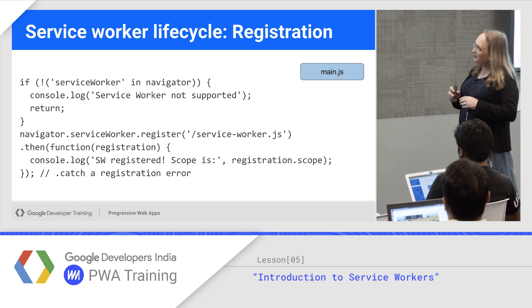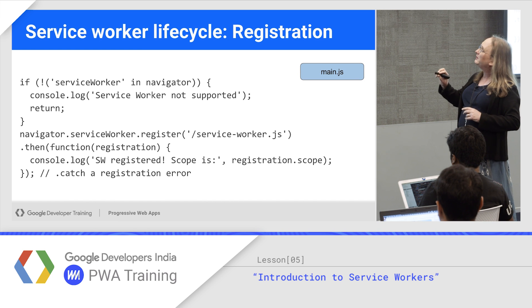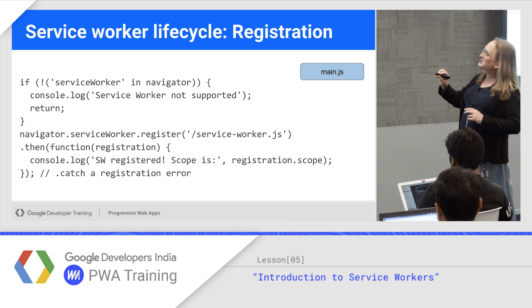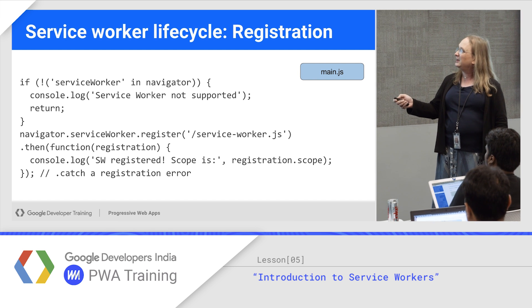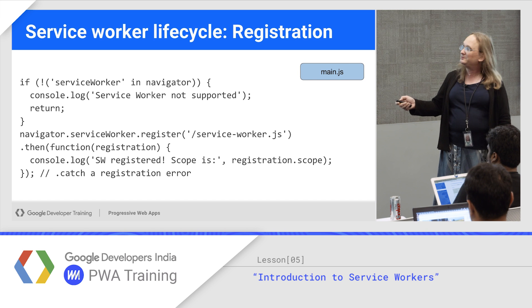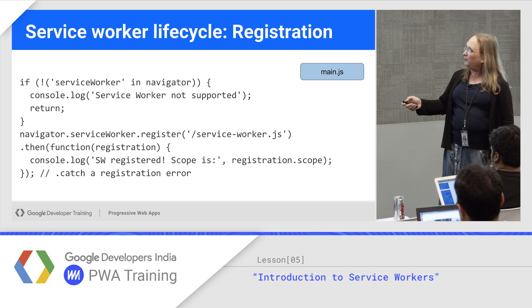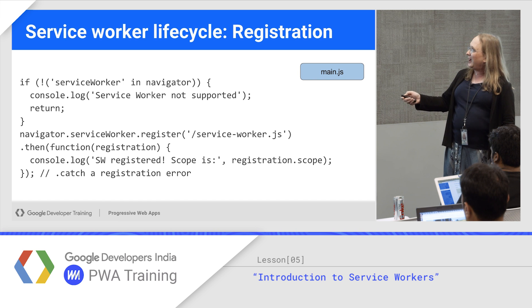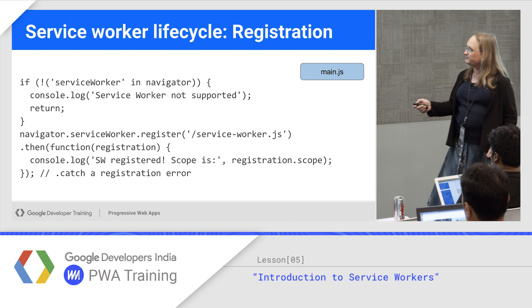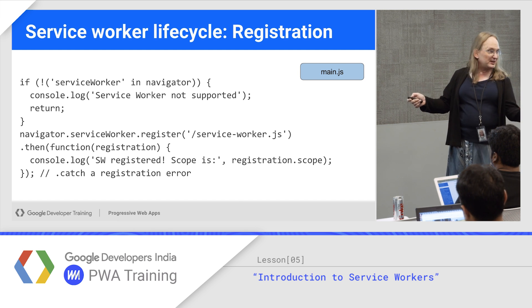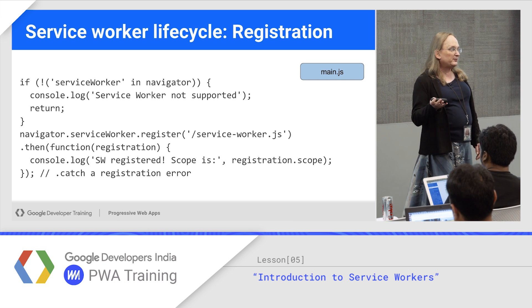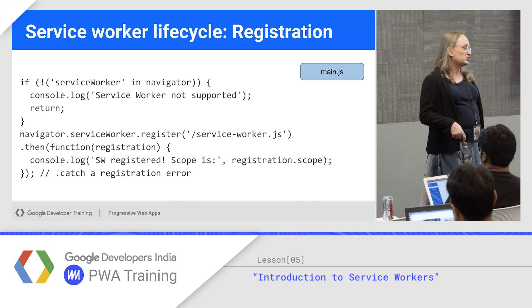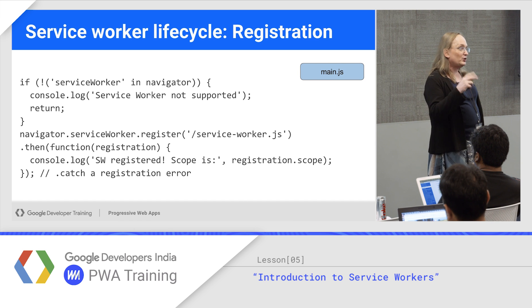In the main JS file, first check if service workers are supported using 'serviceWorker' in navigator. If not, log and skip out. If it exists, call register and give it the path to your script. That returns a promise because it's an async operation. When done, you'll get a registration object back, which you can hang on to — it's used for things like enabling push notifications. For what we're doing today with the cache, you don't need the registration object.